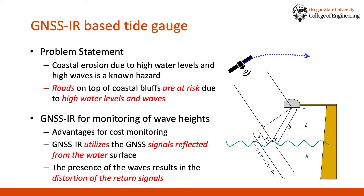GNSS has great advantages for coastal erosion monitoring. Many GNSS units are already available near the coast and are easy to maintain and install. Thus, GNSS can play important roles by effectively monitoring coastal inundation and erosion.